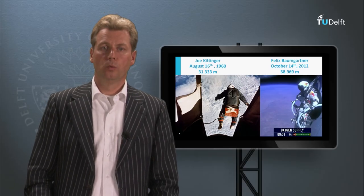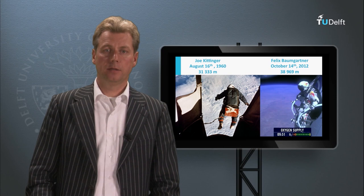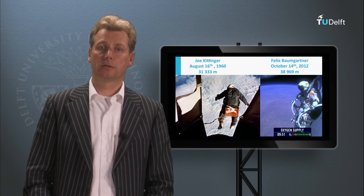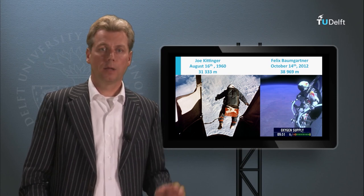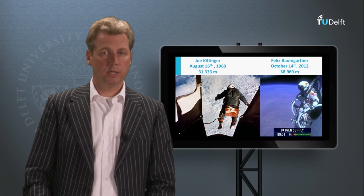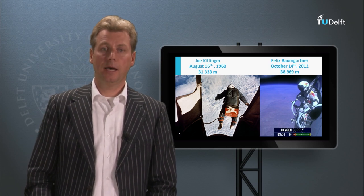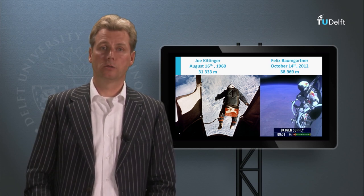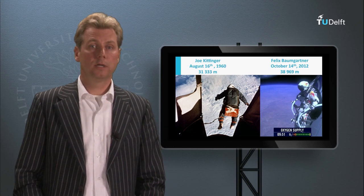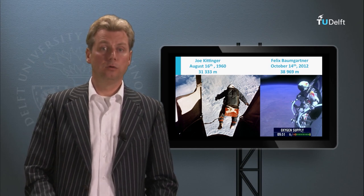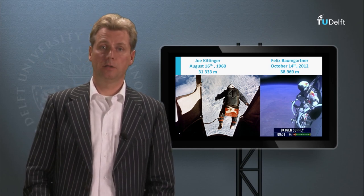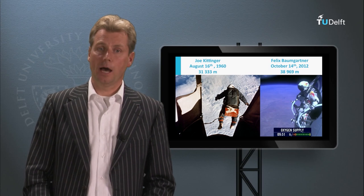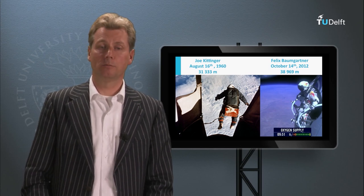With these equations we can calculate several examples, such as the Kitzinger and Baumgartner cases. In the next video I will calculate the pressure and density at Joe Kitzinger's altitude to see how close he really was to space. Then you can try the same for Baumgartner as an exercise to see how much he was in space and out of the atmosphere.